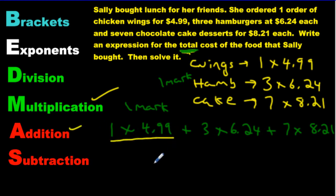So let's solve this here. We have 1 times $4.99. Okay, let's scratch it out and put the answer. That's just $4.99. Now we have 3 times 624. And then we're going to multiply these two and we get $18.72.